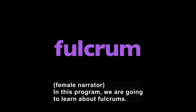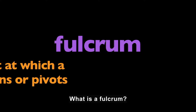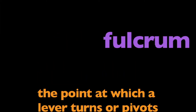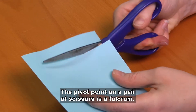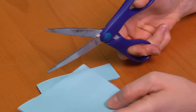In this program, we are going to learn about fulcrums. What is a fulcrum? A fulcrum is the point at which a lever turns or pivots. Someone uses scissors to cut a piece of paper. The pivot point on a pair of scissors is a fulcrum — it's where the blades cross.